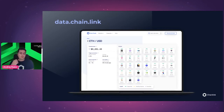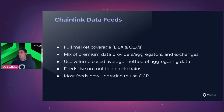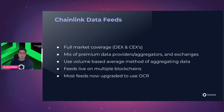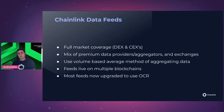To use Data Feeds, go to data.chain.link, select the blockchain and the price feed pair, and you can see all the necessary data — uptime, how many oracles are serving that data, the latest price, and so on — then include the contract address in your smart contract. To get the price feed you just call a view function, which on a blockchain doesn't cost any native coin. In summary, Chainlink Data Feeds consist of price feeds, NFT floor price feeds, and proof of reserve feeds, all with coverage from premium sources.